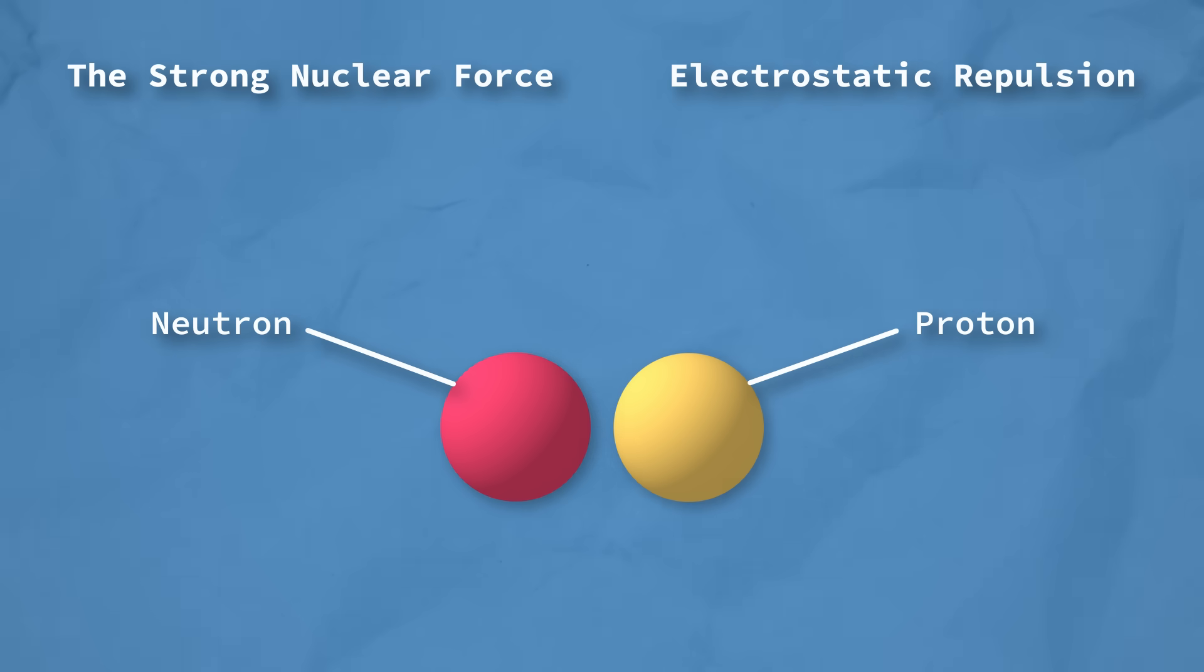To explain this, let's take a look at a stable nucleus and how its neutrons and protons interact with each other. There are two fundamental forces at play here: the strong nuclear force and electrostatic repulsion. The strong nuclear force is a force that holds neutrons and protons together. Conversely, electrostatic repulsion causes protons to repel one another.